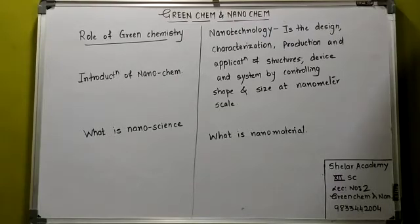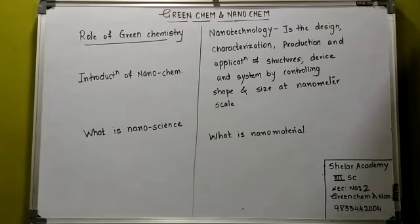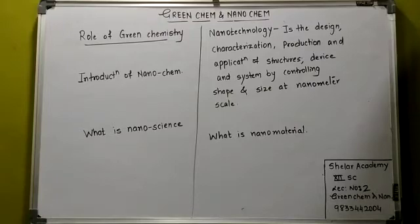Who was the father of green chemistry? What are the principles of green chemistry? Green chemistry also saves money. It can save companies money by reducing the need for costly chemicals, reagents, and solvents, lowering insurance and legal costs, reducing waste disposal costs, and saving energy.